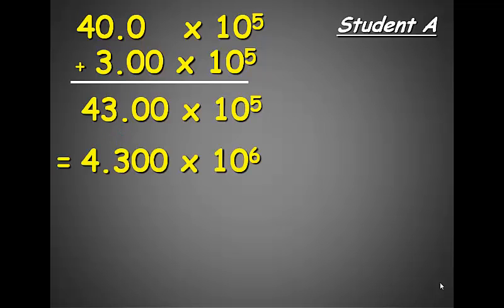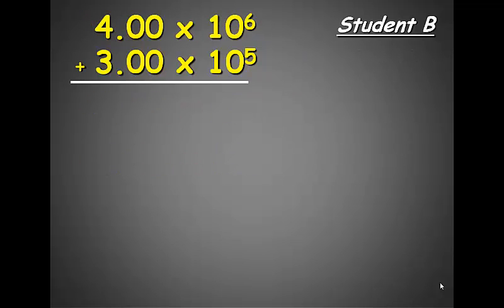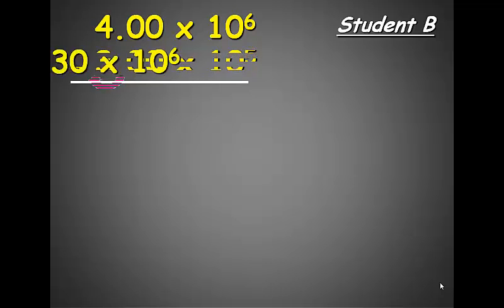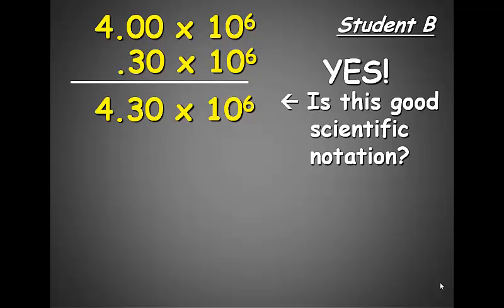To avoid this problem, what you should always do is find the smaller number of the grouping and move the decimal point on the smaller number. If we had done that in the original problem, we would have focused on the 3 times 10 to the 5th and moved the decimal point over so that the exponent increases. In order to increase our exponent, we need to move the decimal to the left. Therefore, our 3 in the 3 times 10 to the 5th now becomes 0.3 times 10 to the 6th. The exponents are the same, we can add our numbers together, and we get 4.30 times 10 to the 6th. Is that good scientific notation? You bet.